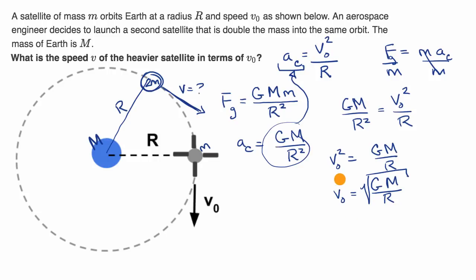What's interesting here is the speed we need to maintain this orbit is in no way a function of the mass of the satellite. I don't see a lowercase m anywhere in this expression. Since this is independent of the mass of the thing in orbit, if you double the mass from lowercase m to two times lowercase m, it does not change the needed orbital speed. The speed V of the heavier satellite in terms of V-naught is the same thing. V equals V-naught. It doesn't matter what you do to the mass, you need the same orbital speed.